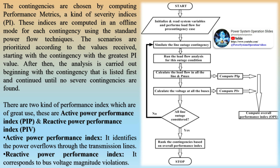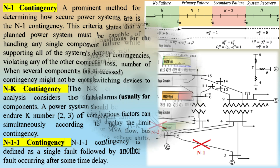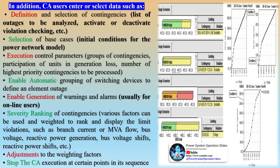Contingency analysis in power systems is a critical process used to predict and evaluate the impact of potential failures or outages on the electrical grid. It involves simulating various what-if scenarios such as the failure of a generator, transmission line, transformer, or load to understand the effects on the system's stability and reliability. Key aspects include: predicting equipment failure and taking corrective actions before the system becomes unstable; using security performance indices to assess system safety and rank contingencies by severity; and simulating outages to examine load flow or short circuit impacts after removing components like transformers, buses, and lines.